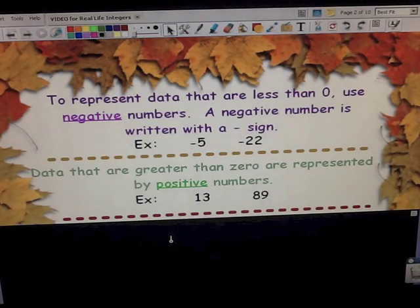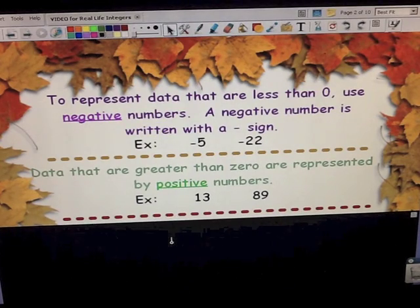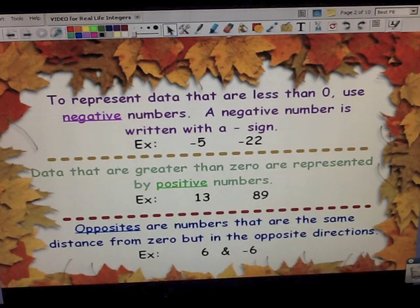Data that are greater than zero are represented by positive numbers. Positive 13, positive 89. And opposites are numbers that are the same distance from zero but in opposite directions. For example, 6 and negative 6.